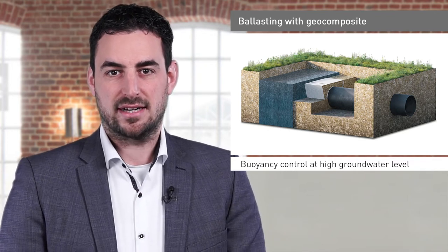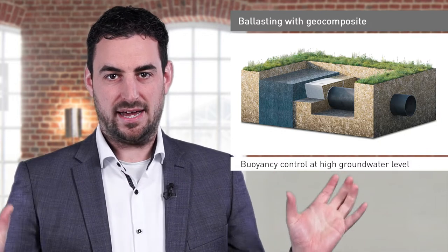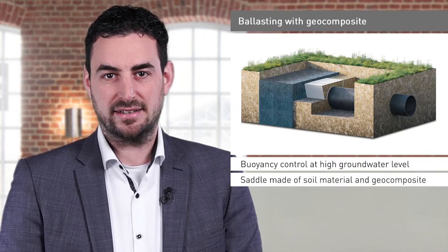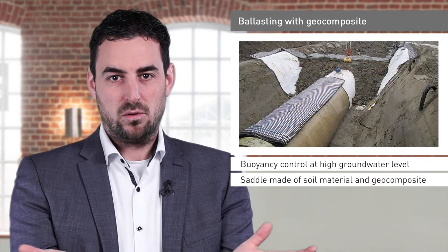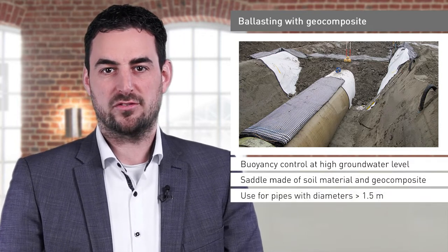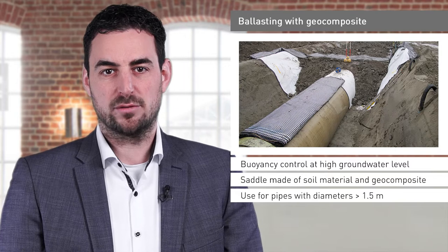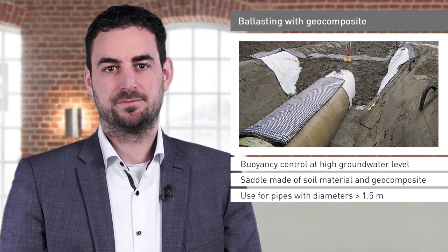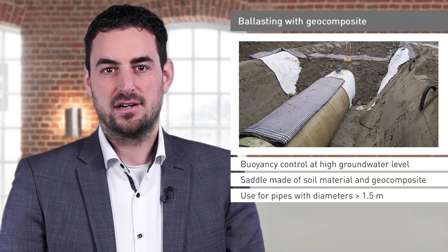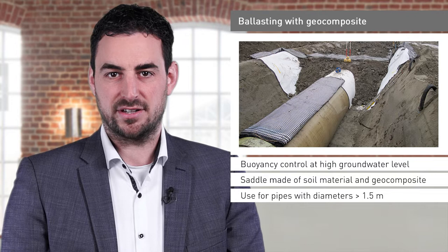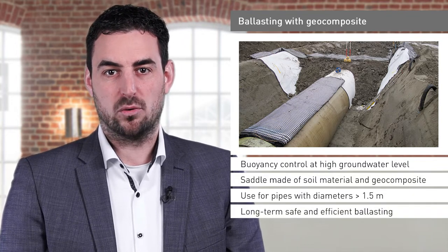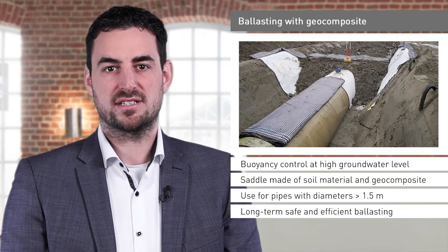To ballast a pipe, the soil mass above and at the side of the pipe can be activated. For this purpose, the soil zone is wrapped in a geotextile and then rests on the pipe like a saddle. This application is preferably used for pipes or tanks with diameters greater than 1.5 meters. Depending on the soil type, a composite consisting of a geogrid and a non-woven fabric should ideally be chosen to wrap the soil. This way the composites encapsulate the soil without any risk of soil loss during rearrangement processes.